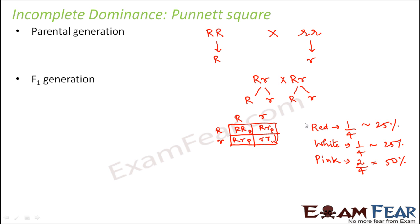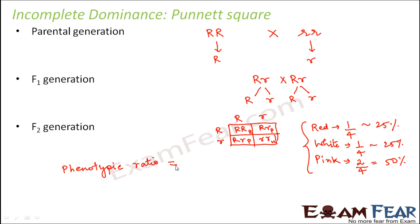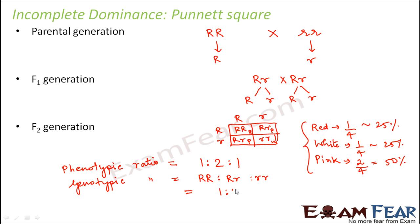So what is the phenotypic ratio in the F2 generation? As per Mendel's rules, the phenotypic ratio would have been 3:1, because pink would have also been categorized under red. But here the phenotypic ratio is 1:2:1 — that is red to pink to white. For the genotypic ratio, it is capital R capital R to capital R small r to small r small r, which is also 1:2:1. So in incomplete dominance, the phenotypic ratio and the genotypic ratio are the same — both are 1:2:1.